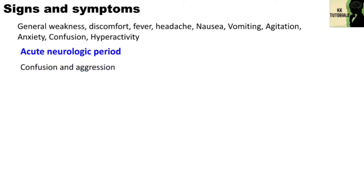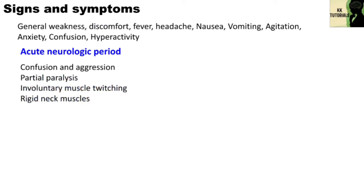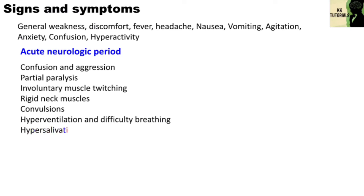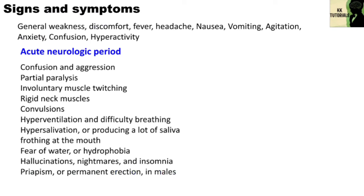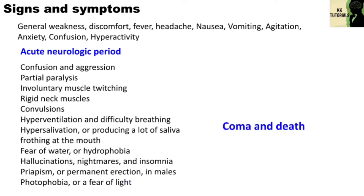Advanced symptoms include confusion and aggression, partial paralysis, involuntary muscle twitching, rigid neck muscles, convulsions, hyperventilation and difficulty breathing, hypersalivation, frothing at the mouth, fear of water or hydrophobia, hallucinations, nightmares and insomnia, priapism or permanent erection in males, and photophobia or fear of light. A person may enter a coma and most people then die within three days. During the coma stage, even with supportive therapy, virtually no person survives rabies.